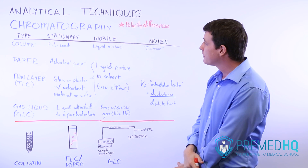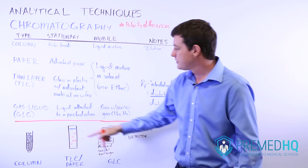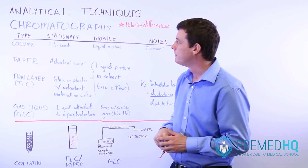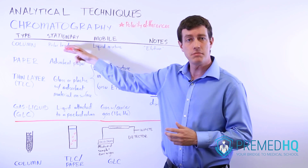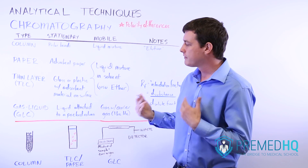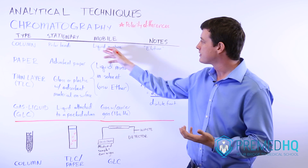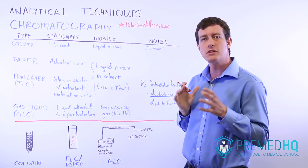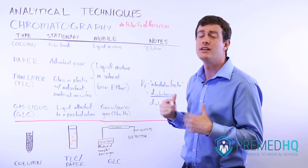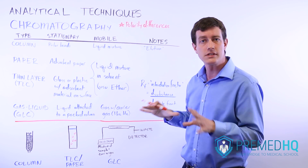One type of chromatography is column chromatography, and there's a schematic here of what goes on with it. The stationary phase consists of polar beads packed within a column, and the mobile phase is a liquid mixture — usually several different organic compounds dissolved in an ether, though sometimes dissolved in other things.